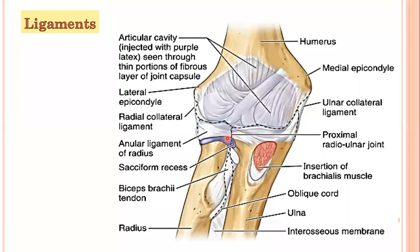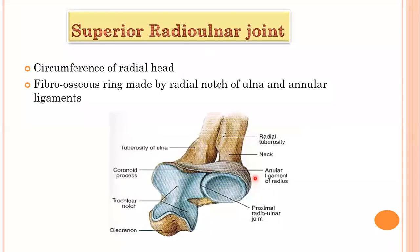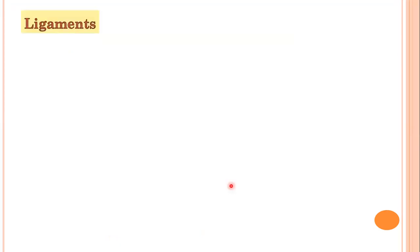Since it is a synovial joint, it has ligaments. What is the variety of the superior radio-ulnar joint? Because there is a ring and the head rotates within it on its central axis, these two parts make it a pivot type of synovial joint. In this category, one articular surface is stationary and the other is rotating — this is the pivotal type of synovial joint, and this is the type of the superior radio-ulnar joint.